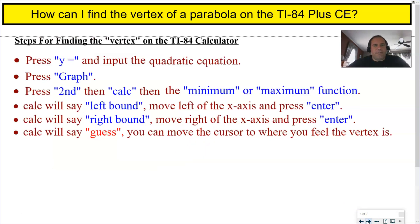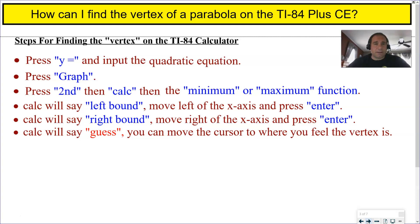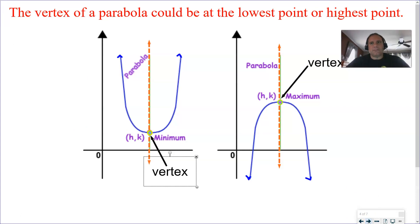Steps for finding the vertex on the TI-84 calculator: press Y equals, input the quadratic equation, press Graph and you'll see the parabola, then press Second, then Calc, then either Minimum or Maximum. Calc will say left bound — move left of the vertex and press Enter. Then it says right bound — move right of the vertex and press Enter. Then it says guess; I like to move it exactly where I think the vertex is and press Enter one final time to get the lowest or highest point.